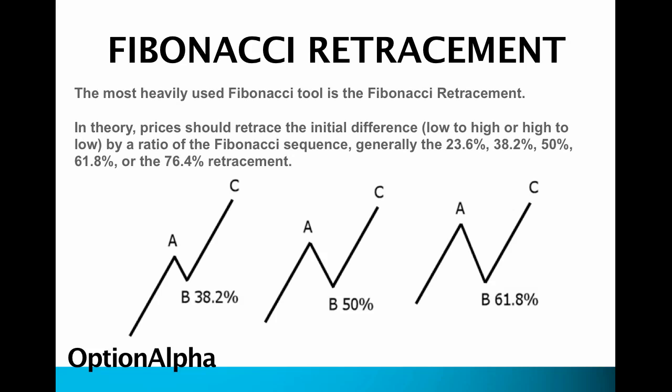Fibonacci retracements are the most heavily used Fibonacci tool. In theory, prices should retrace the initial difference — low to high or high to low — by a ratio of the Fibonacci sequence. The main retracement levels are generally the 23.6, 38.2, 50%, 61.8, and 76.4. If a stock moves from a low to a high, it's going to retrace that move by about 38%, 50%, or 61.8%, and those become the major areas of support and resistance going forward.